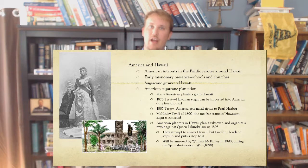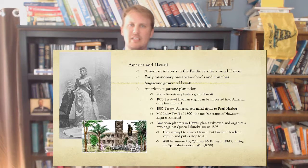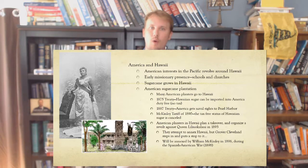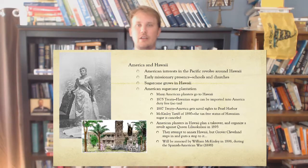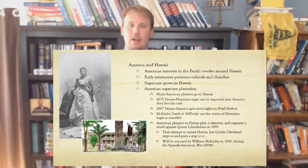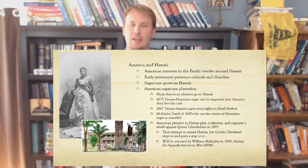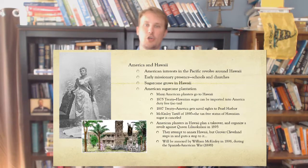One of the places America does get involved with is Hawaii. American interests in the Pacific revolve around the island of Hawaii. There was an early missionary presence — schools and churches were founded. But probably the main reason American businessmen were interested was the sugar cane in Hawaii. In 1875, there's a treaty where Hawaiian sugar can be imported into the United States duty-free. In 1887, another treaty gave America naval rights to Pearl Harbor. And in 1890, the McKinley Tariff took away the tax-free status of Hawaiian sugar.